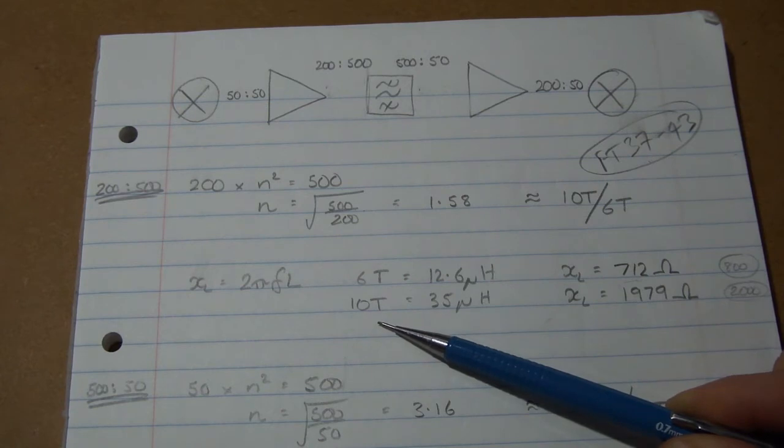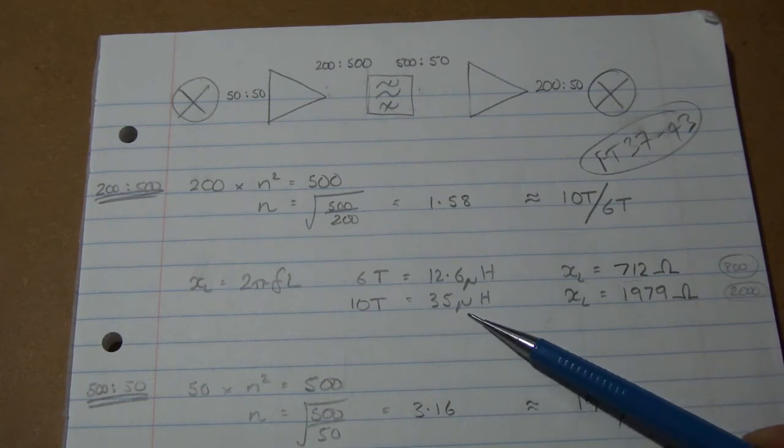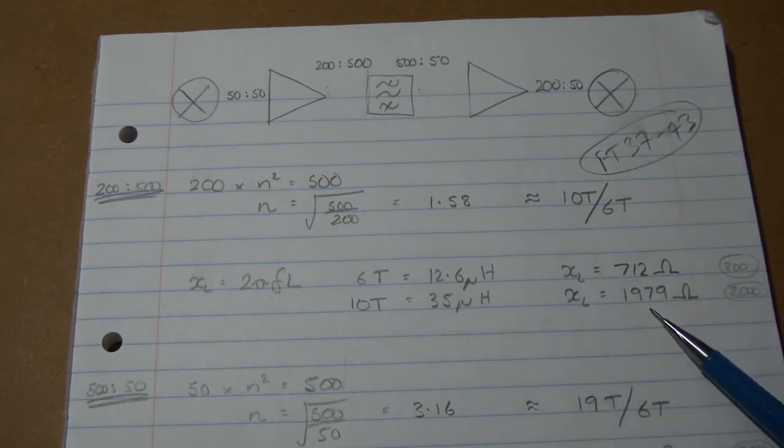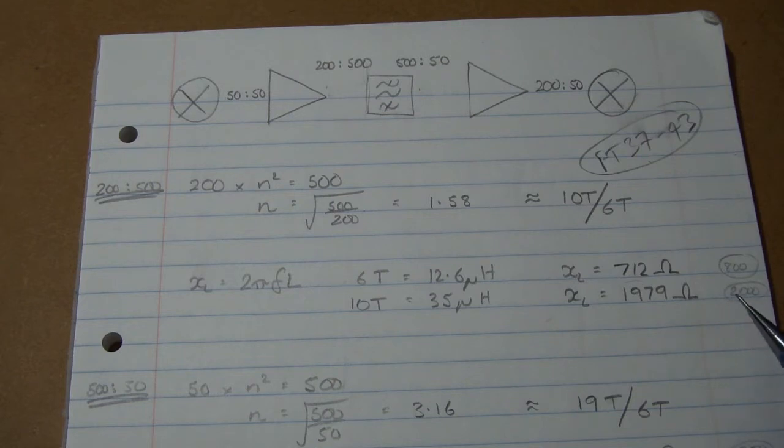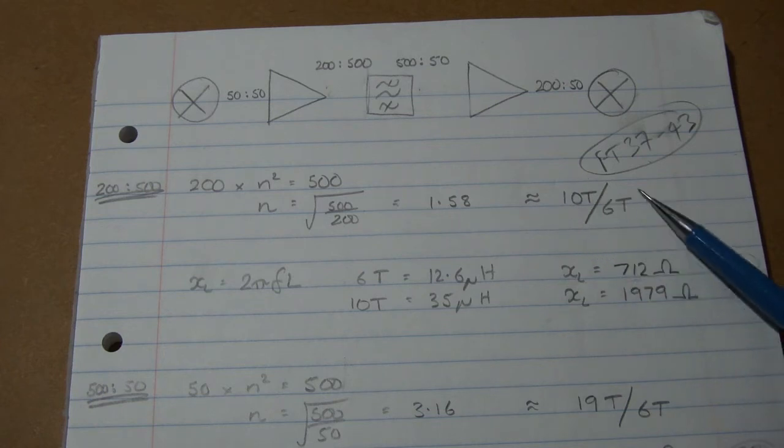And then similarly for 10 turns, it would give us 35 microhenries, which will give us 1979 ohms, and 4 times 500 is 2000. So again, we're sort of on the margins there of that sort of rule of thumb. So we'll live with that, and we'll give it a go.